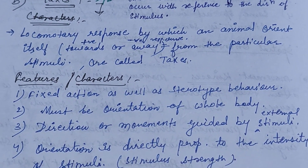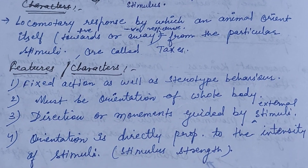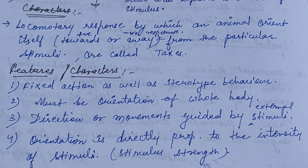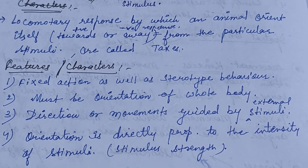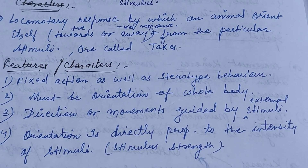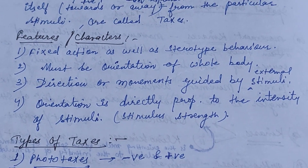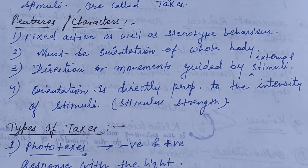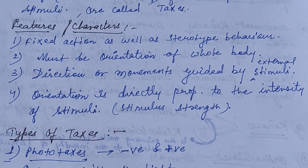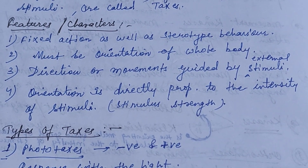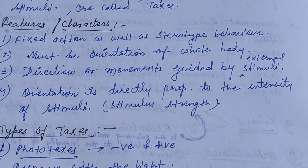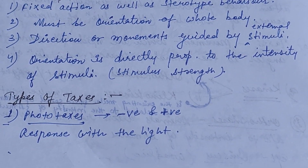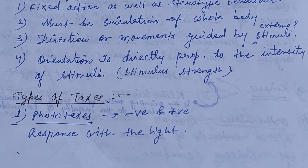Taxis is a locomotor response by which an animal orients itself towards or away from the stimulus — called positive or negative response. Features of taxis: it is a fixed action and stereotype behavior; must involve orientation of the whole body; direction of movement is guided by external stimuli; orientation is directly proportional to the intensity of stimuli.